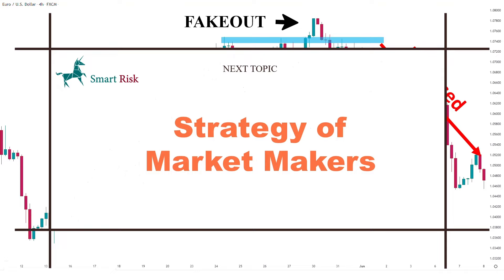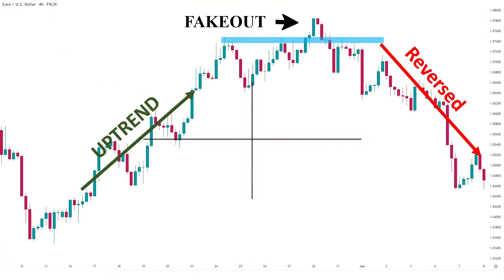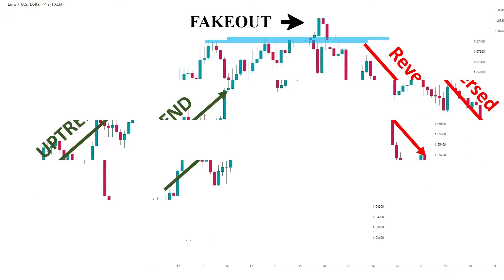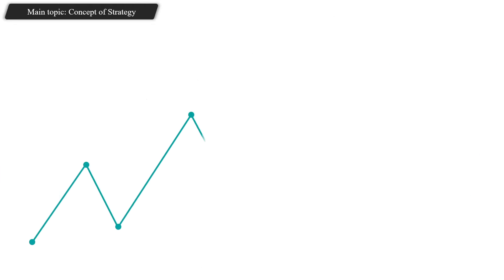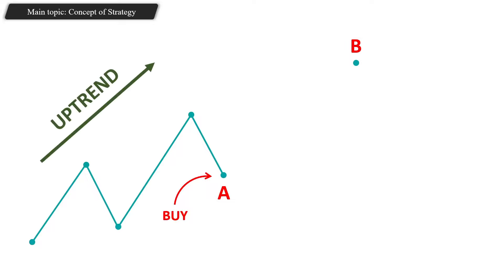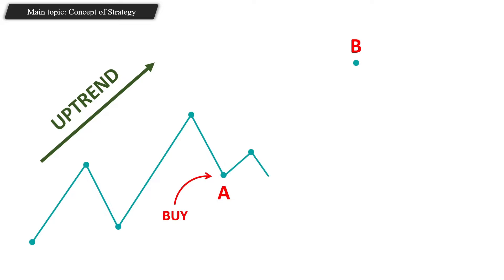Now that you know the required concepts, let's jump into the market makers trading setup. Imagine we are in an uptrend and market makers want to push the market from point A to point B, needing to buy a million shares. Since everyone knows we are in an uptrend, everybody is looking to buy and no one wants to sell. So they use a simple trick: they create a consolidation area and break it to the downside, making people think the uptrend is over.